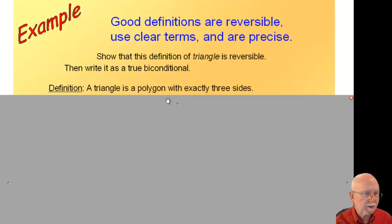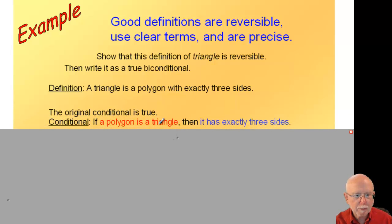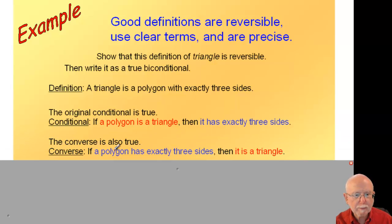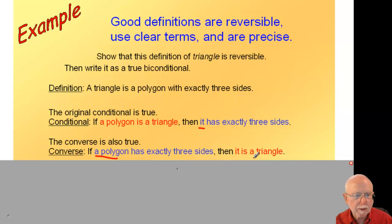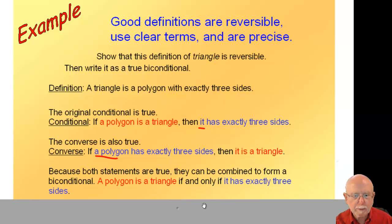To show the definition of a triangle is reversible, I need to show both the original conditional and its converse are true. Given: 'A triangle is a polygon with exactly three sides,' I first make it a conditional: if a polygon is a triangle, then it has exactly three sides — that's true. The converse: if a polygon has exactly three sides, then it is a triangle — also true. Notice the 'it' must be properly resolved as 'a polygon' for correct grammar. Because both are true, I can write the biconditional: a polygon is a triangle if and only if it has exactly three sides.